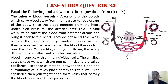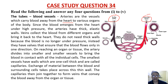Since the blood emerges from the heart under high pressure, the arteries have thick elastic walls. Veins collect the blood from different organs and bring it back to the heart. They do not need thick walls because the blood is no longer under pressure. Instead, they have walls that ensure blood flows only in one direction.